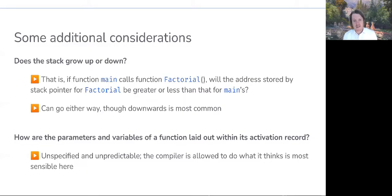Next question you might have is, okay, so we have this thing called an activation record, how are the parameters and variables of a function laid out within that activation record? Well, this is going to be unspecified and unpredictable. The compiler is essentially allowed to do what it thinks is most sensible. So the actual composition of an individual activation record, how the local variables and parameters are laid out within that record, will be up to the compiler.